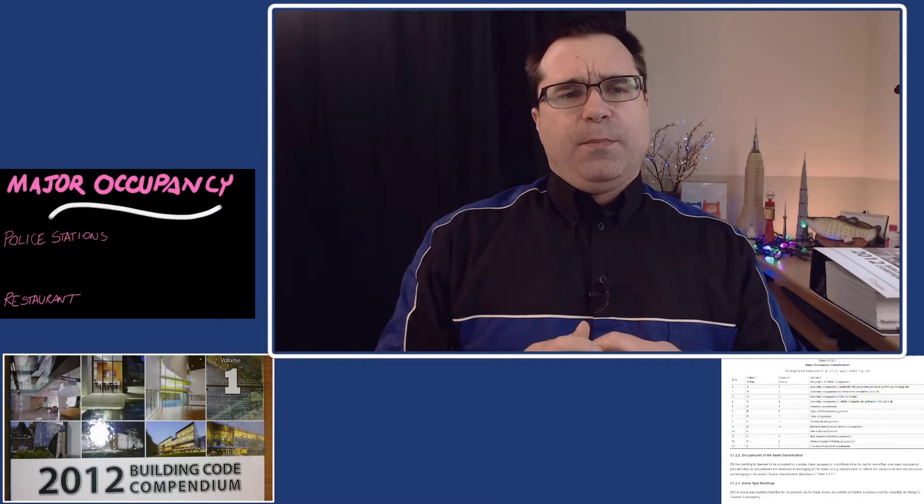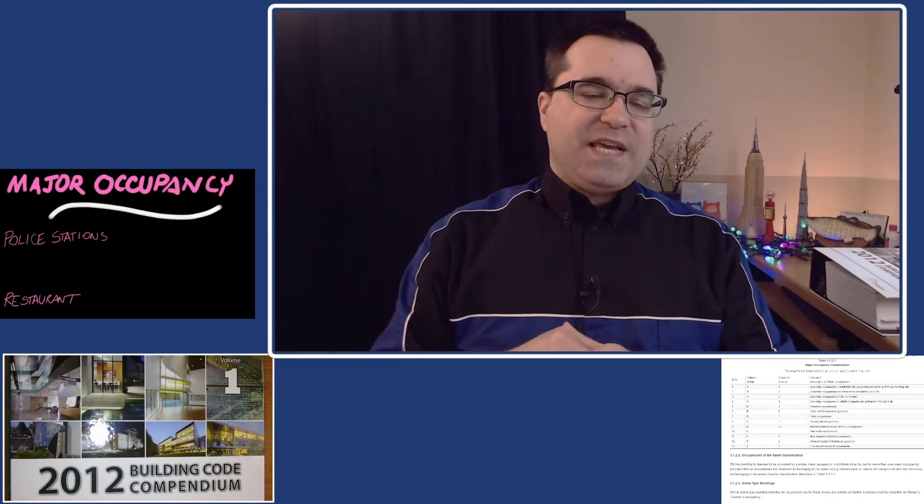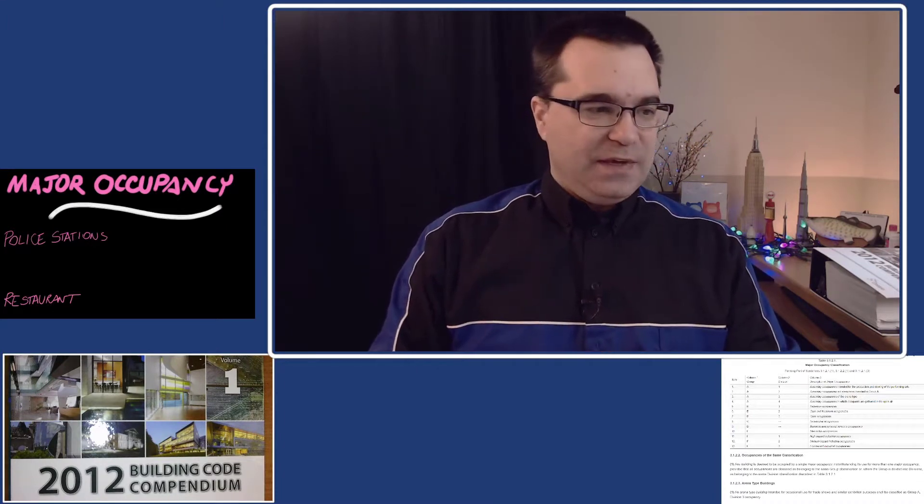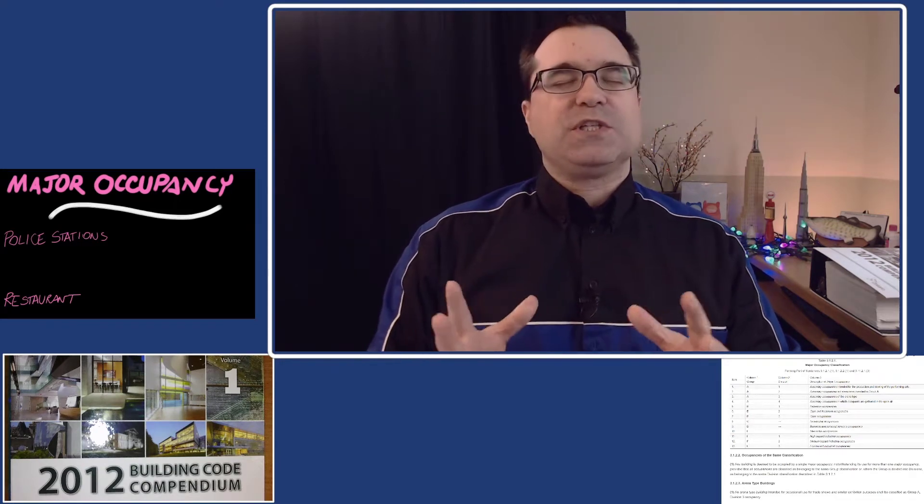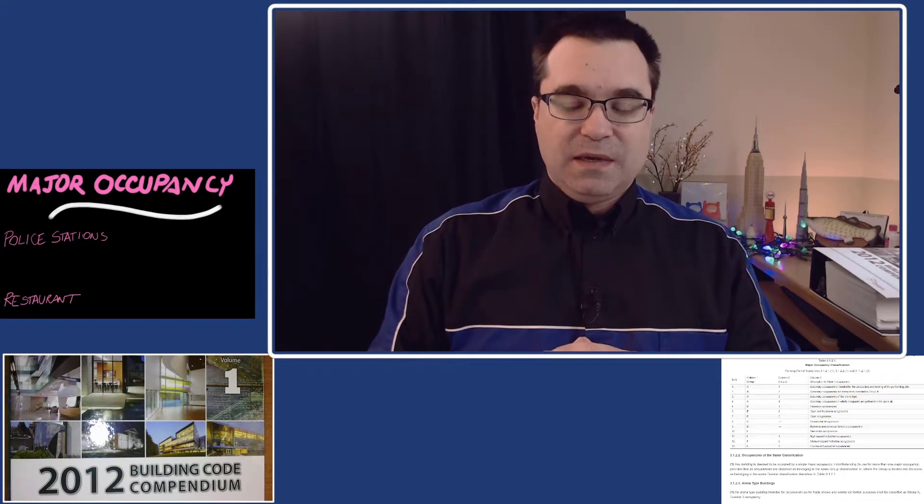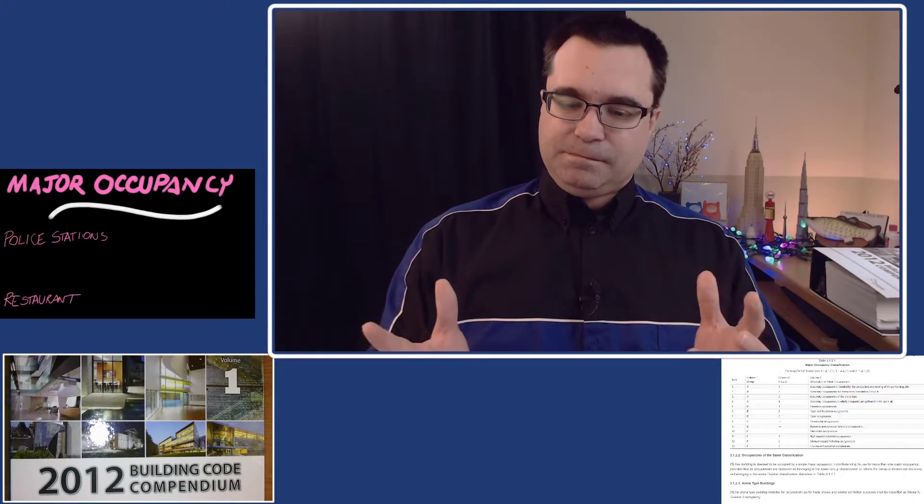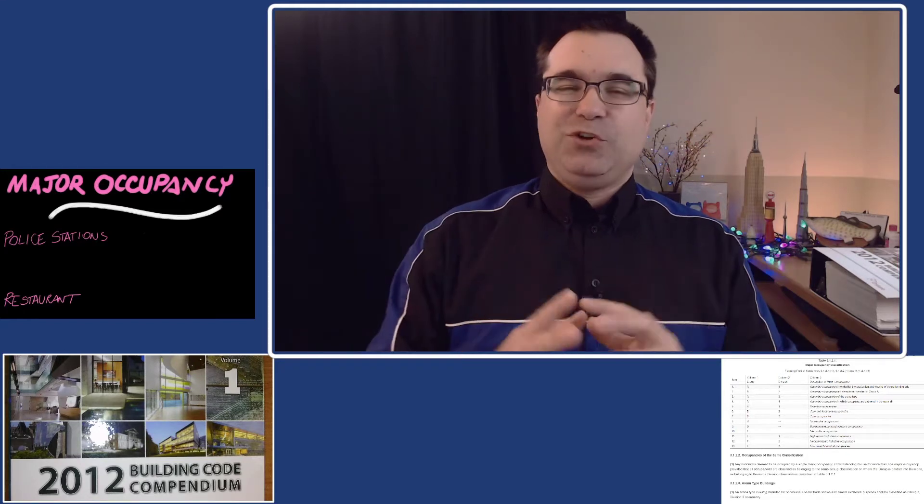I want to get right to the point so you don't have to watch this whole video because it's going to be a bit long. I'm going to do a whole bunch of examples. If you already know everything about the building code, let me get to the point. The better way of finding major occupancies if you're just starting with the building code is use Appendix A. That's it.